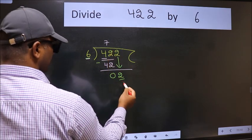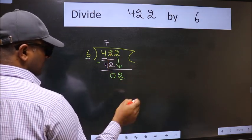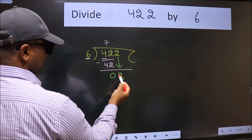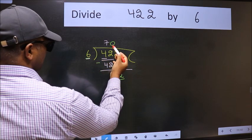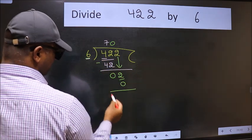If I take 1, we will get 6, but 6 is larger than 2. So what we do is we take 0. So 6 into 0 is 0.